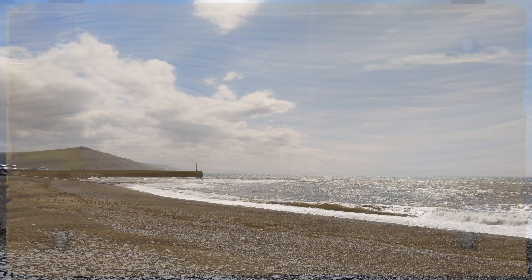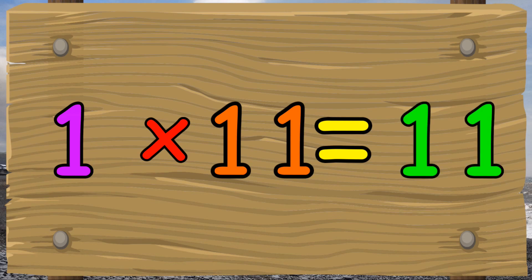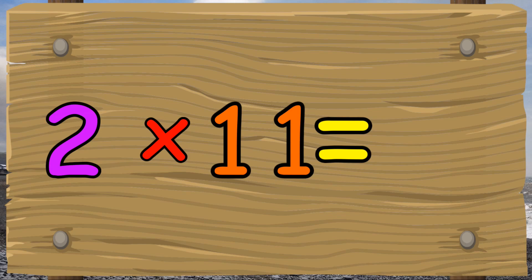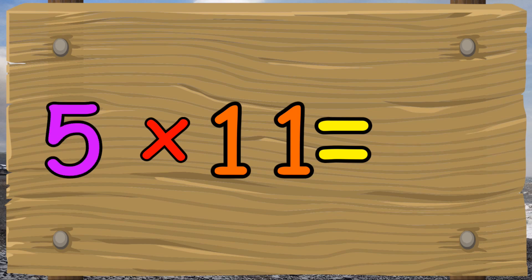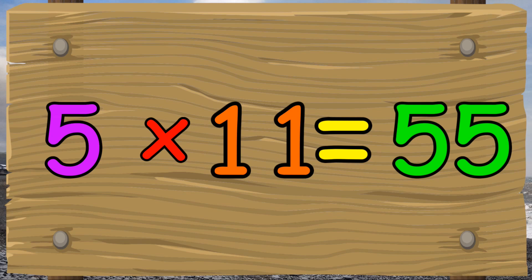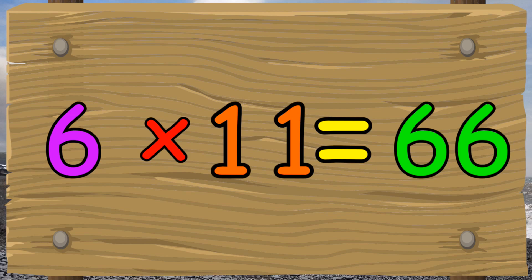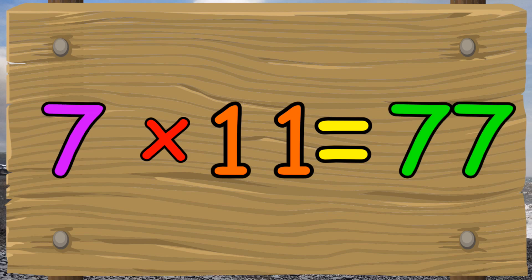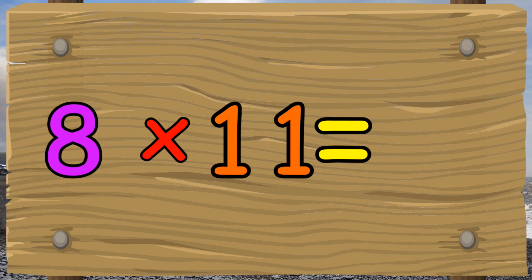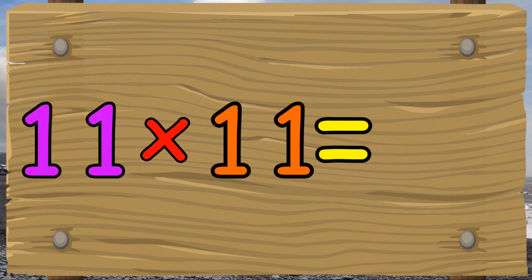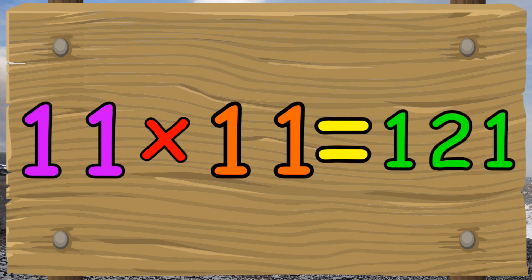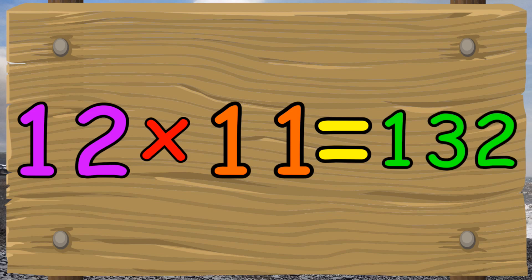Let's learn the 11 times table. 7 times 11 equals 77. 8 times 11 equals 88. 9 times 11 equals 99. 10 times 11 equals 110. 11 times 11 equals 121. 12 times 11 equals 132.